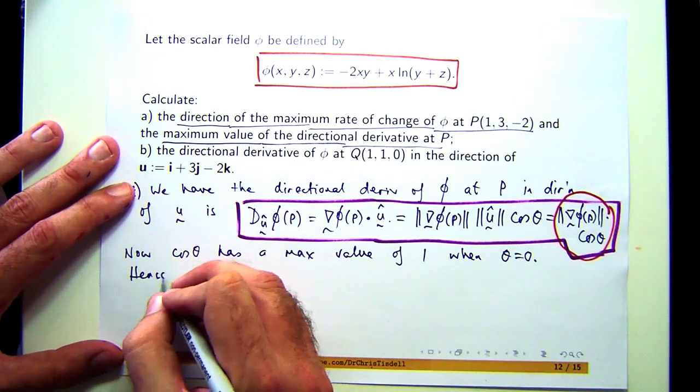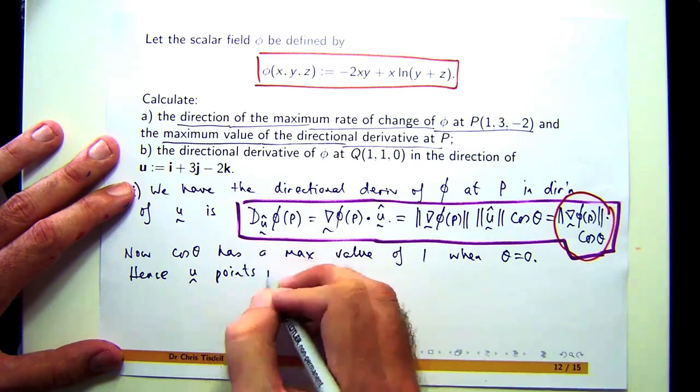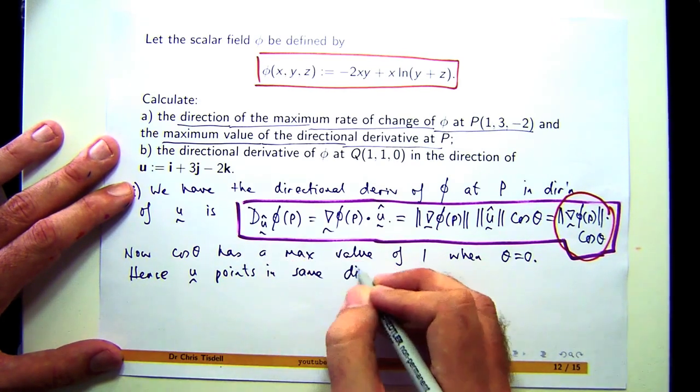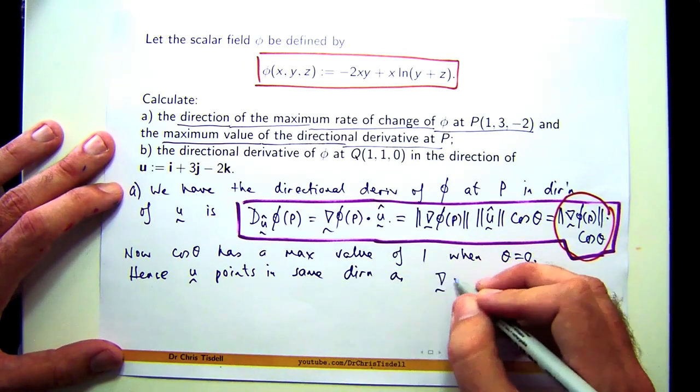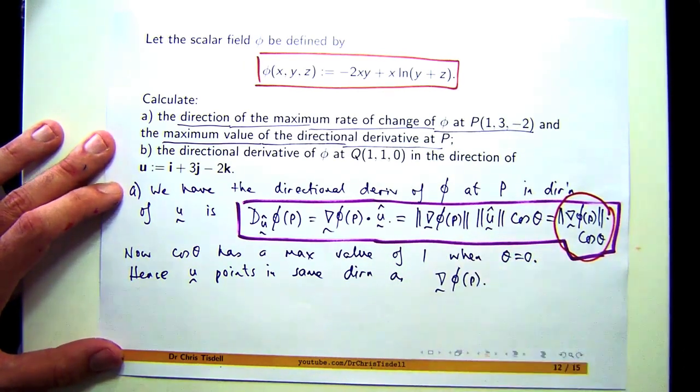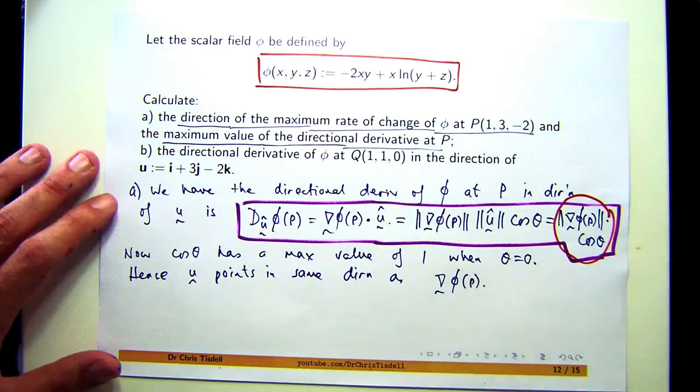Hence, u points in the same direction as grad φ at P. We still haven't worked this out, though. We're going to work it out now.